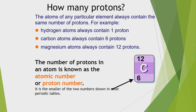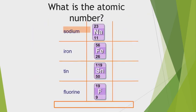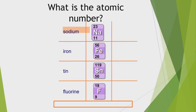In an atom, the number of protons equals the number of electrons. This number is called the atomic number. For example: sodium (Na, 23, 11) has atomic number 11; iron (26, 56) has atomic number 26; tin has atomic number 50; and fluorine has atomic number 9.